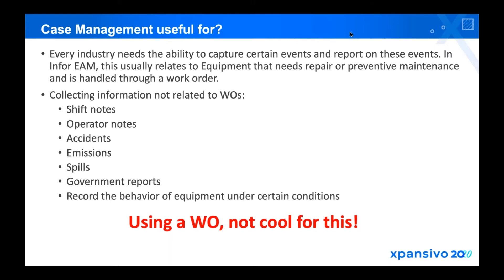That is why we have case management — so we can use it in many ways to capture all these types of events that happen across different industries, and digitally maintain a history of any event or tracking. We can gather data, have all the information needed, and store assessments for future use. If a similar situation arises later, you have all the data and entries from the previous situation to guide you.